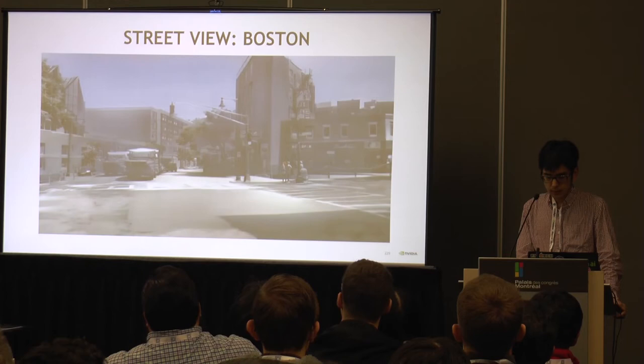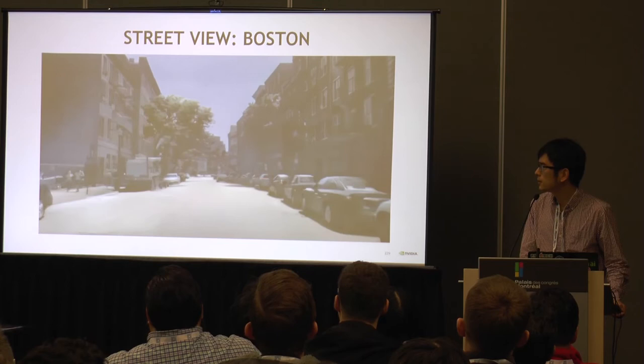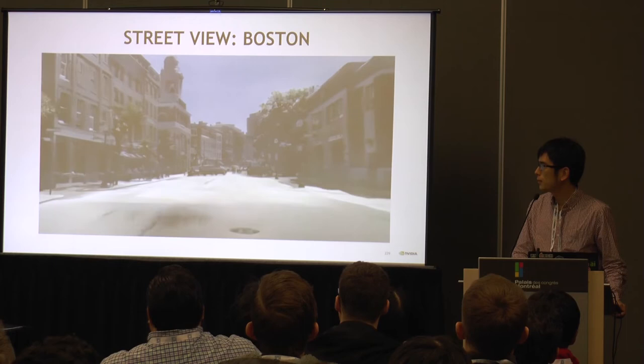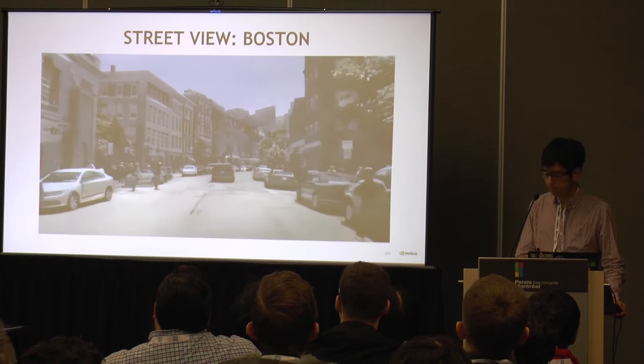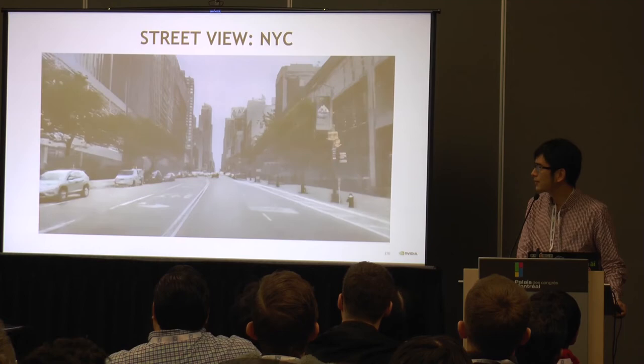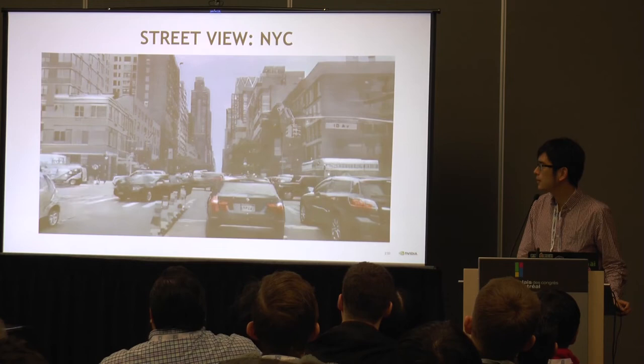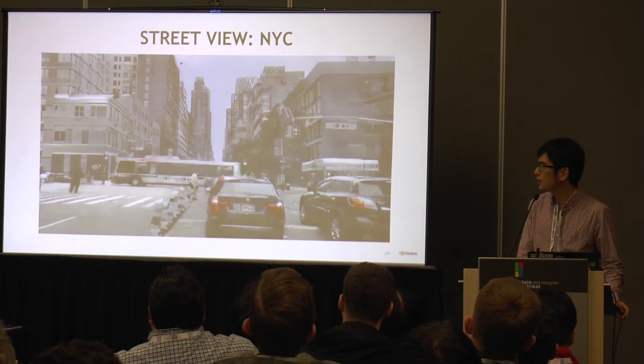Here's an example result when we apply our network to a Boston sequence. Although we train our network on the Cityscapes dataset, you can see that it still generalizes pretty well to other cities. And in this way, we can experience a European style of the Boston city. Here's another example when we applied it to a New York City sequence. It's pretty different from other sequences because it has a lot of skyscrapers and row intersections, but again, we still managed to generate pretty photorealistic and temporally consistent videos.